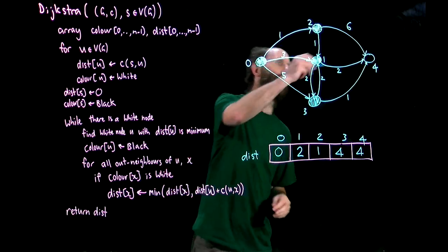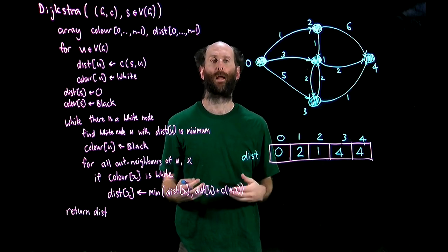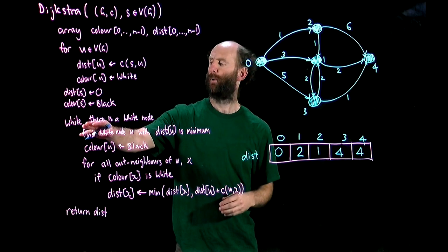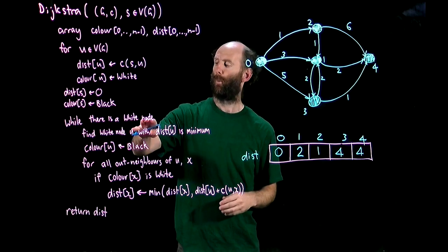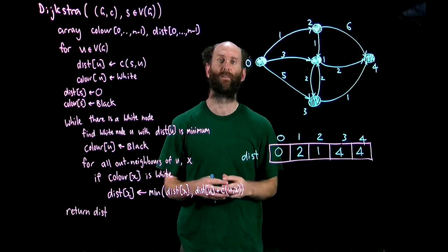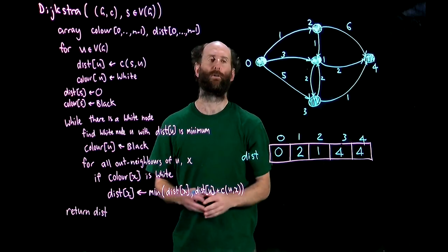Now we'll add four to the black set. It's got no white out neighbors so we're back at the top of the while loop where there are no white nodes. We'll come down here and we'll return our distance array and that completes our pass through Dijkstra's algorithm.